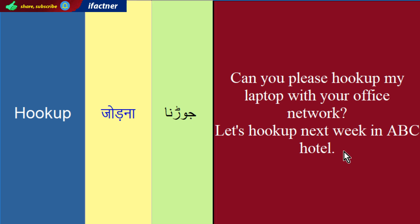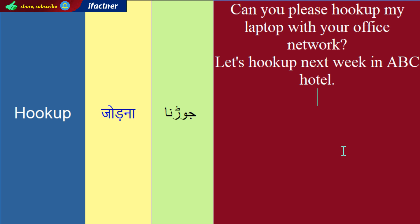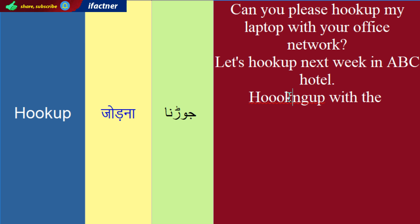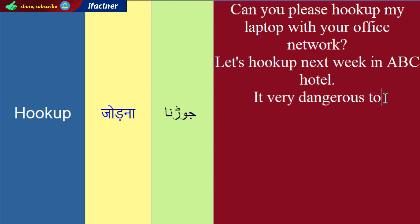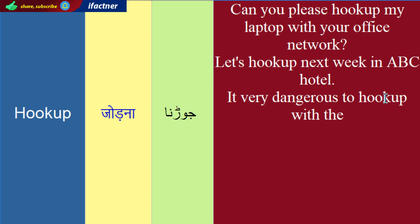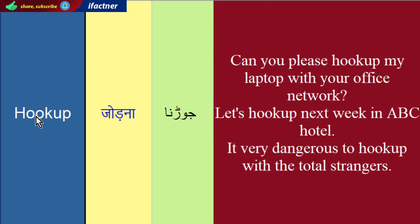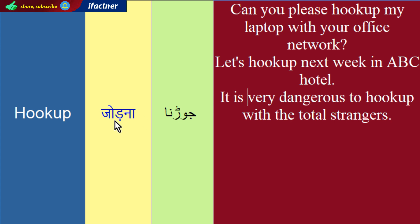Toh, jis tarhaan kaya saktay hai, tisaray meaning ko use kerte hooye hum koi sentence bina saktay hai. Hum keh daytay hai, it's very dangerous to hookup with the total strangers. Ke, total strangers ke saath hookup kerna bohut zyada khata naak hai, shayad koi bhi problem ho sakti hai, un ko koi bimaari ho sakti hai, kuch bhi ho saktay hai. Toh is liye him nae kaha, it's very dangerous to hookup with the total strangers.